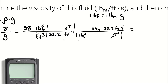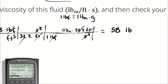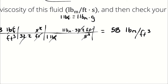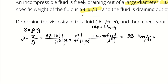Taking 58 times 32.2 divided by 32.2 gives us a density of 58 pounds of mass per cubic foot. That density is going to be one half of the required properties for the Reynolds number later in the problem.